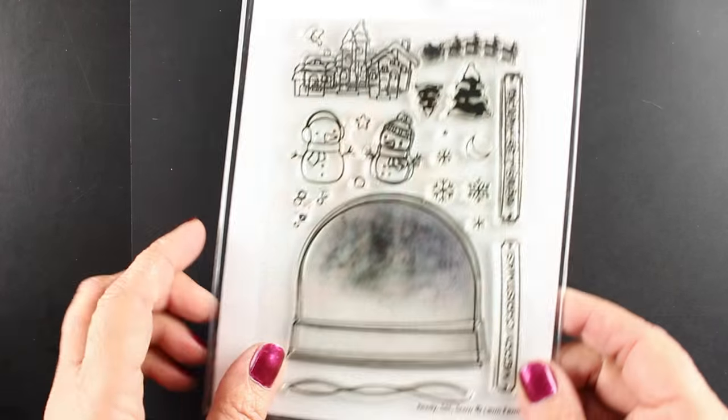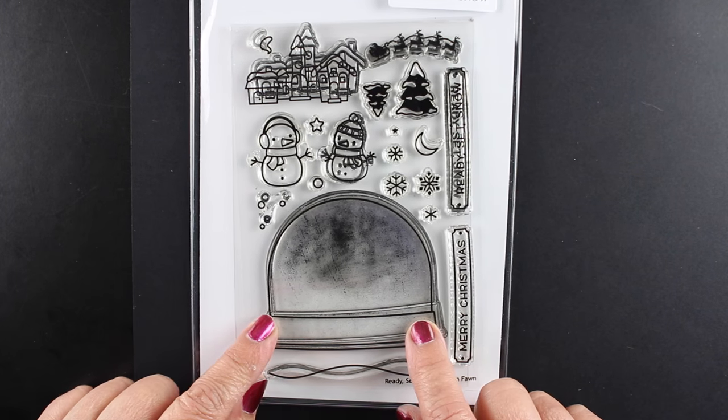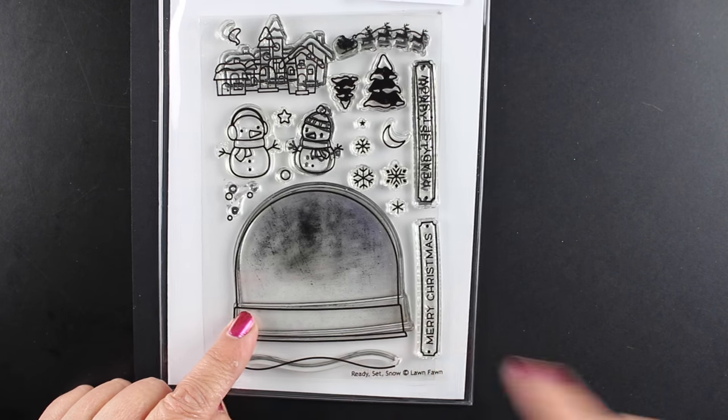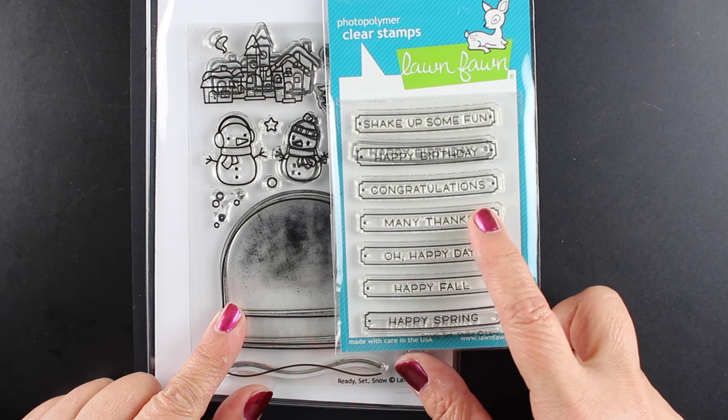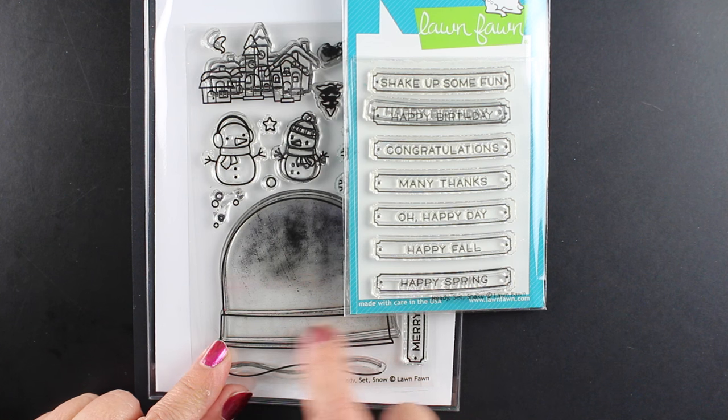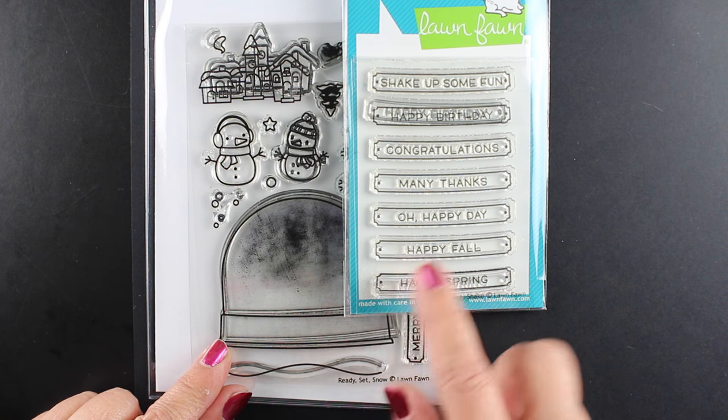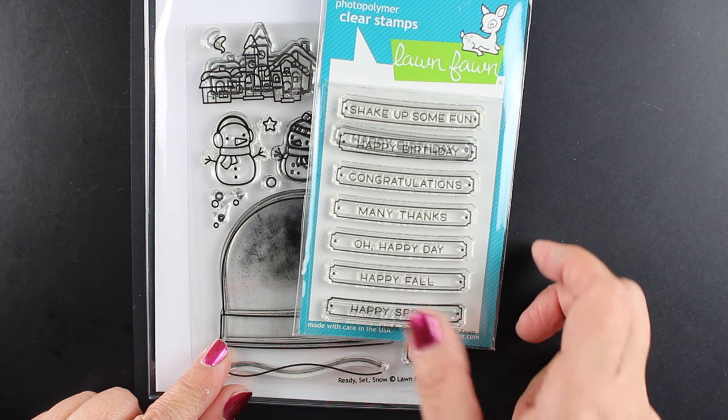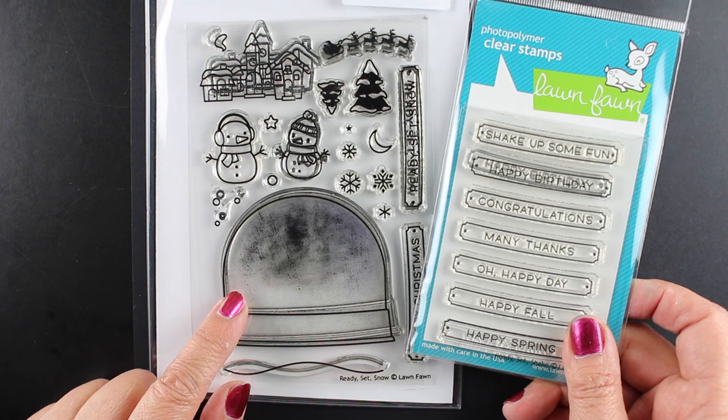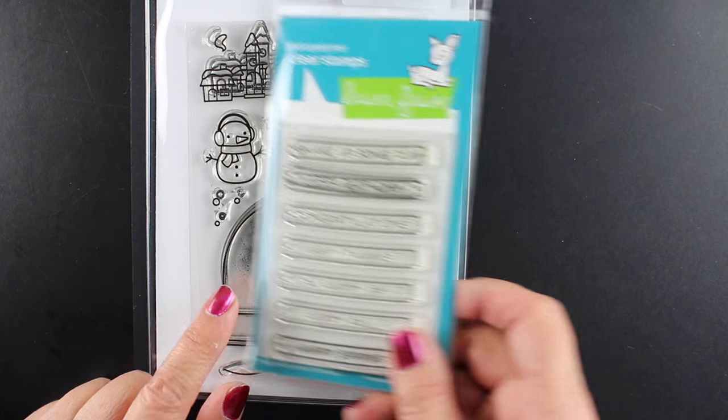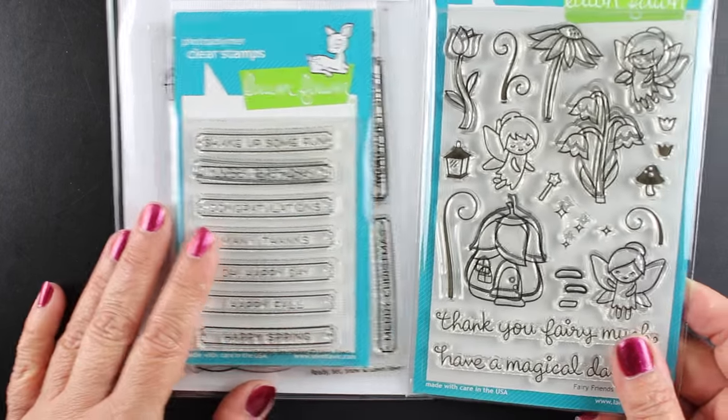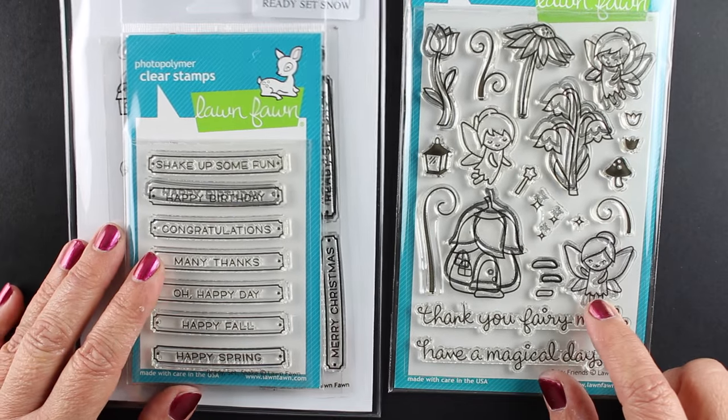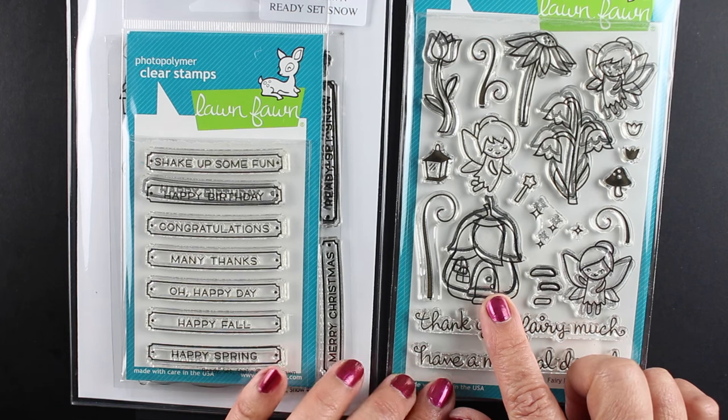I was having a blast looking at all the glass objects in Lawn Fawn stamp sets and that brought me to this one. This is a snow globe and I wanted to use this new set which is Ready Set Snow for the globe and Ready Set Shake has these sentiments. So you can have more than Christmas sentiments to go with this and if you've got the Christmas set you might want to pick up that year round one to make this one useful all year long. And I wanted to use the fairies.